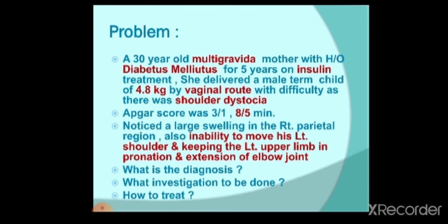Our next problem: a 30-year-old multigravida mother with a five-year history of diabetes, on insulin treatment, delivered a male term child weighing 4.8 kilos — macrosomic — by vaginal delivery with difficulty and shoulder dystocia. The APGAR score was 3 at one minute and 8 at five minutes. The baby had a large swelling in the right parietal region and was unable to move his left shoulder, keeping the left upper limb in pronation and extension at the elbow. What is the diagnosis, what investigations are needed, and how will you treat?